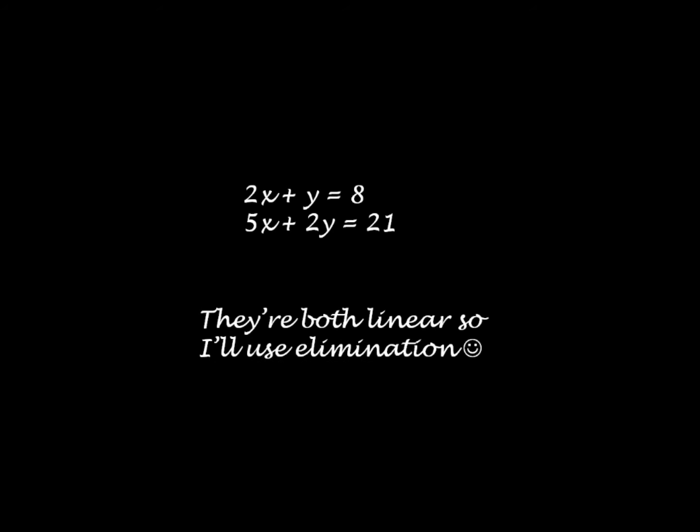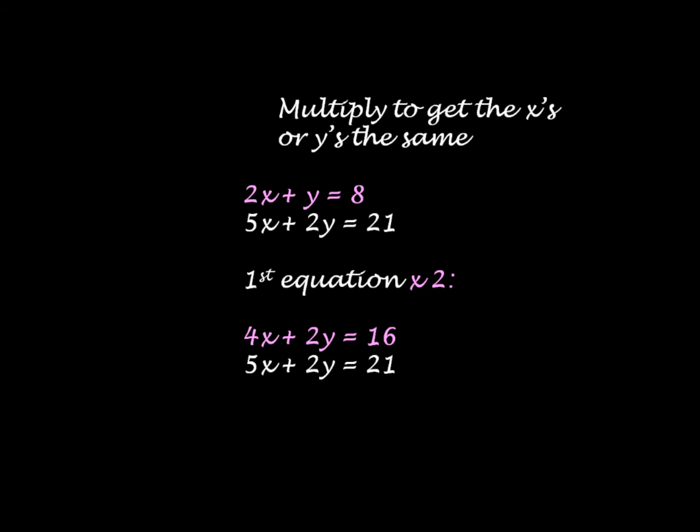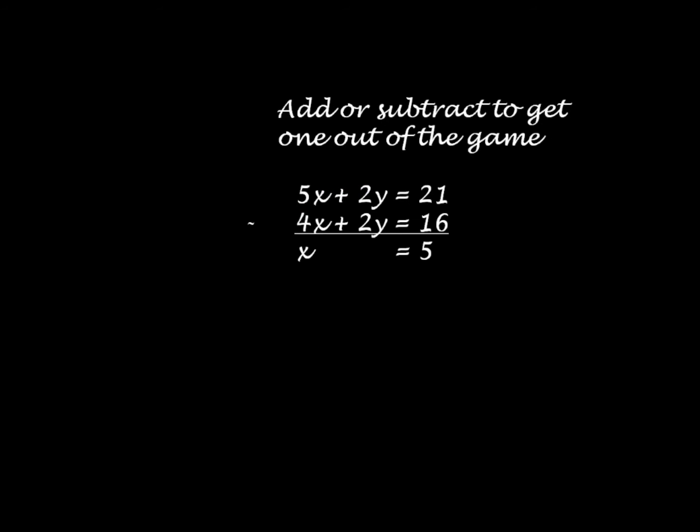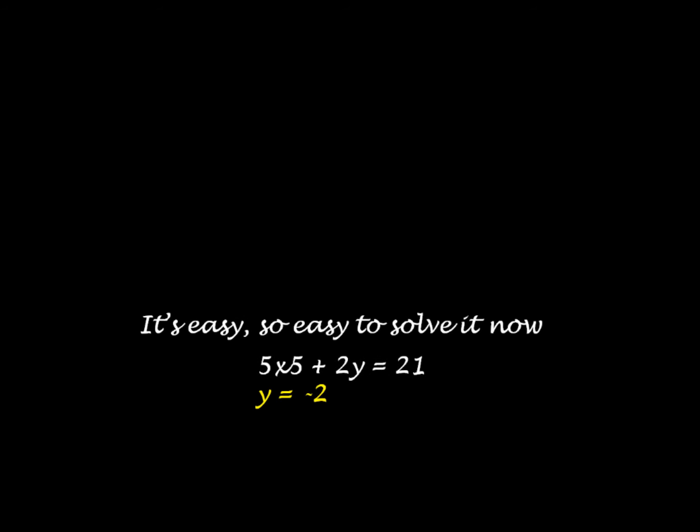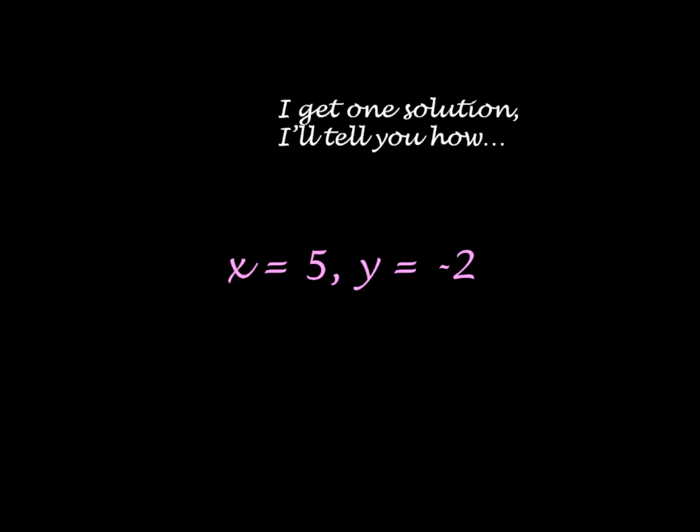I want to solve simultaneous equations. They're both linear so I'll use elimination. Multiply to get the x's and y's the same, add or subtract to get one out of the game. It's easy, so easy to solve it now. I get one solution, I'll tell you how.